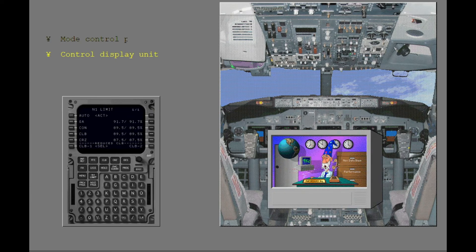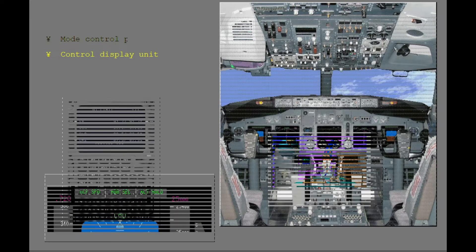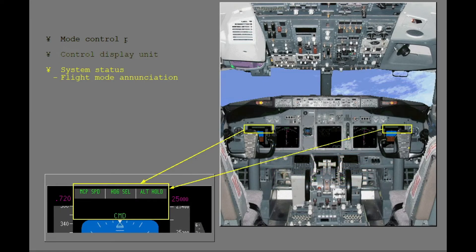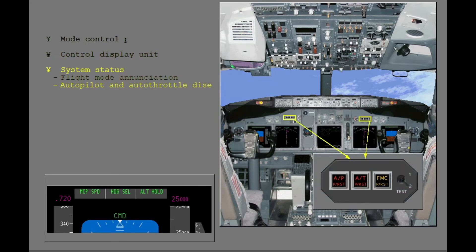The CDU controls and shows data from the FMC. You use the CDU to select thrust limits, target airspeeds, and flight routes for the Autothrottle and AFDS to follow. The Flight Mode Annunciation and the Autopilot and Autothrottle disengage lights show the status of the AFDS.